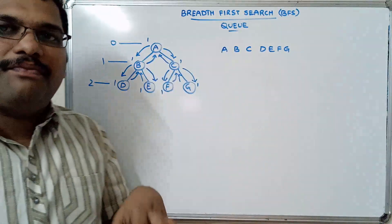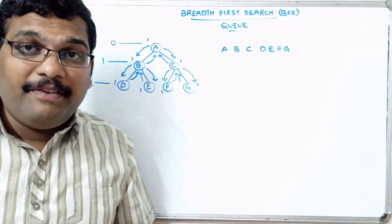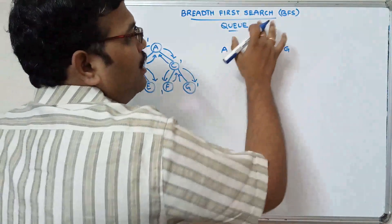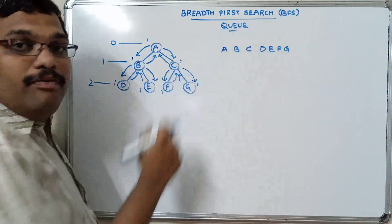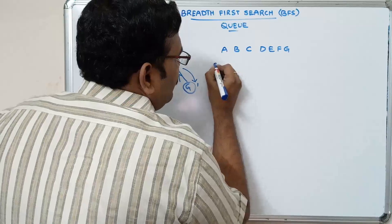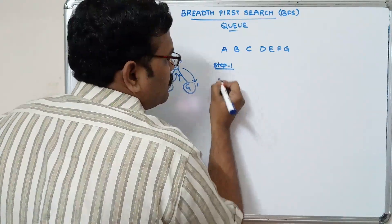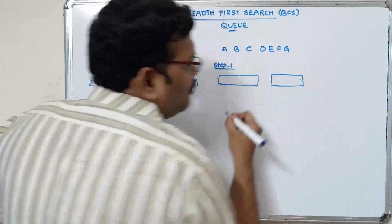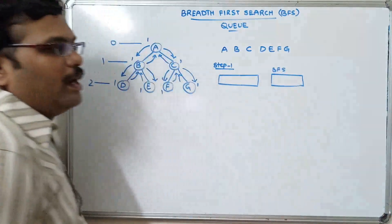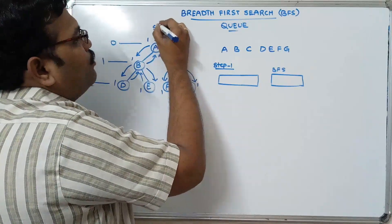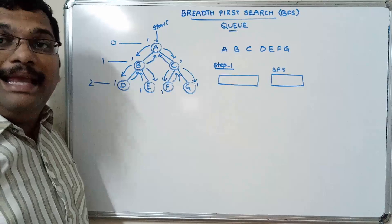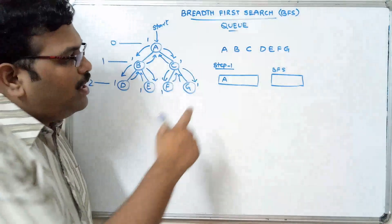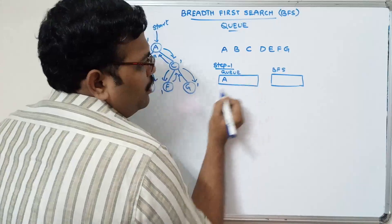In the previous session we saw depth first search — we go in depth. Now we'll see how to implement BFS using a queue. Step one: let us assume A is the start node. Insert A into the queue.